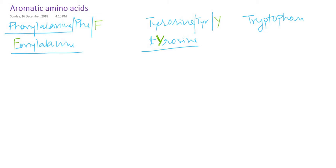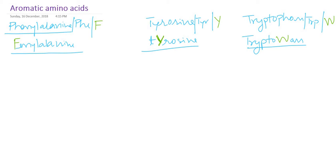For tryptophan, the three-letter abbreviation is T-R-P — not the first three letters. The single letter abbreviation for tryptophan is W. To remember this, you can pronounce tryptophan in your mind as 'Tryptophan-W'. Otherwise it is confusing. So: phenylalanine is F, tyrosine emphasize Y, and tryptophan — memorize W.